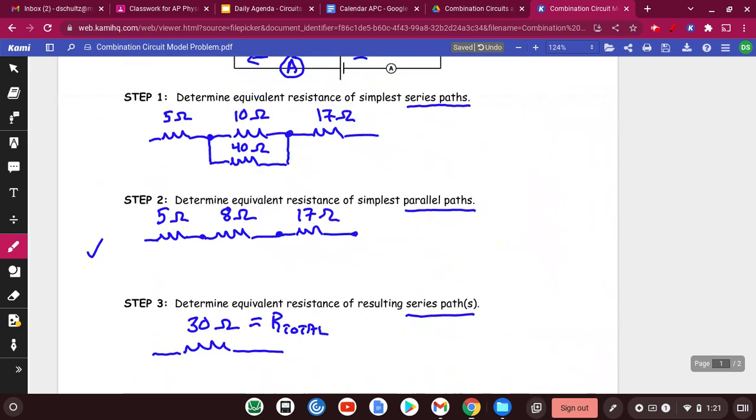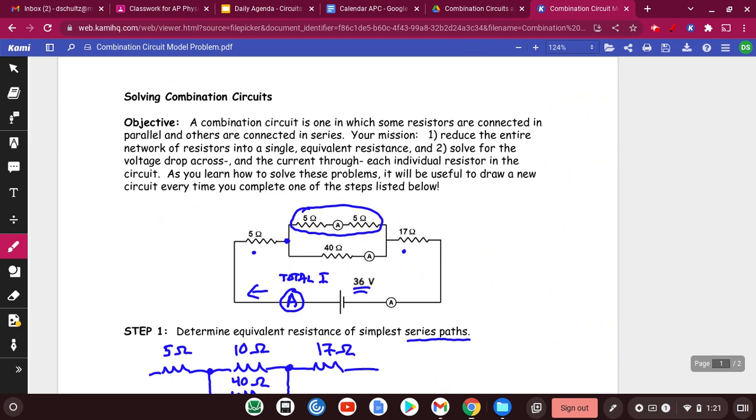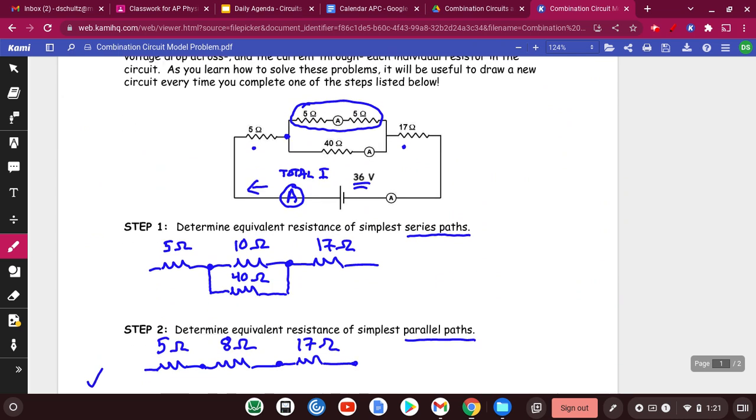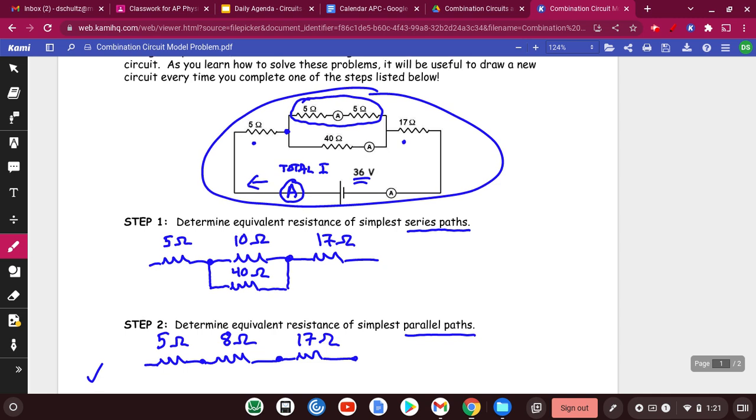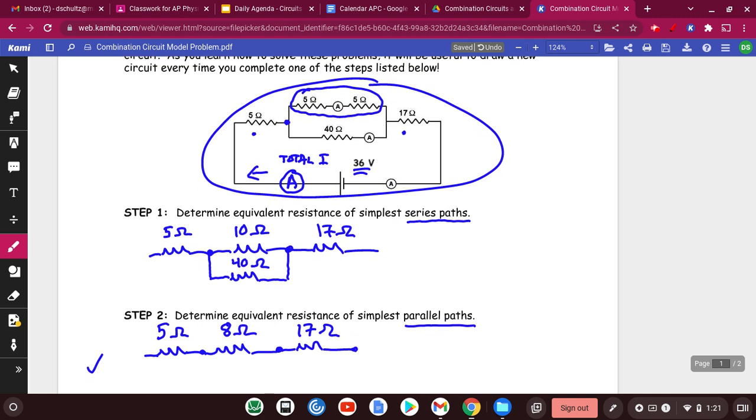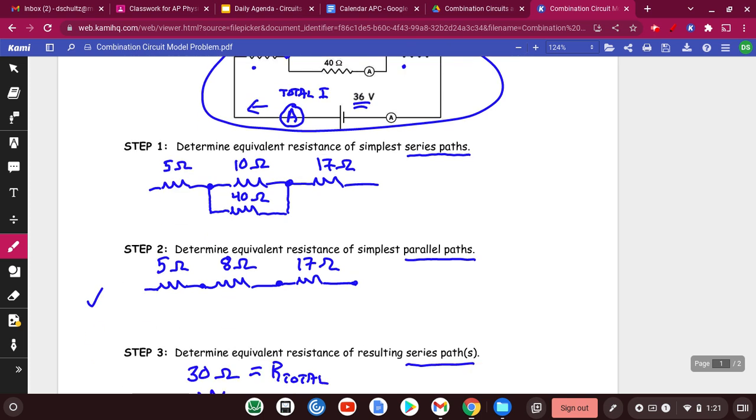So I think that with doing problems like this, the strategy is important. The strategy is first of all to take the complex circuit and start by simplifying it into a single resistor circuit. And I would say every time you make a simplification, you should draw, resketch it. So you've got the pictures there.